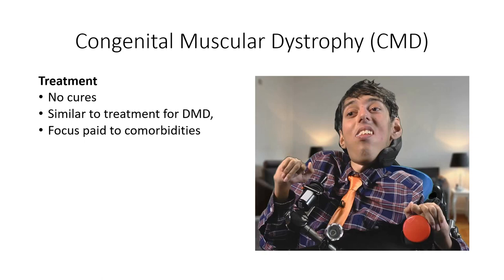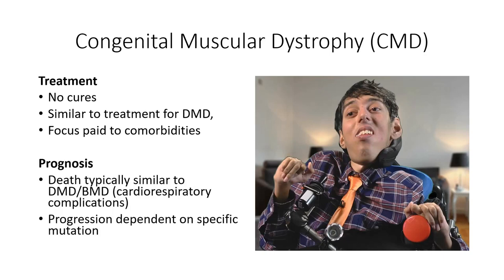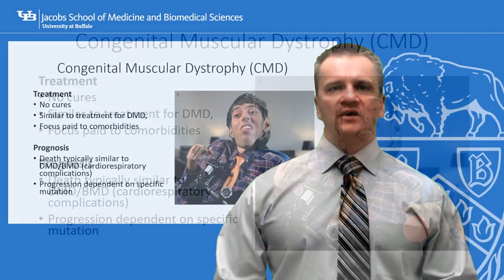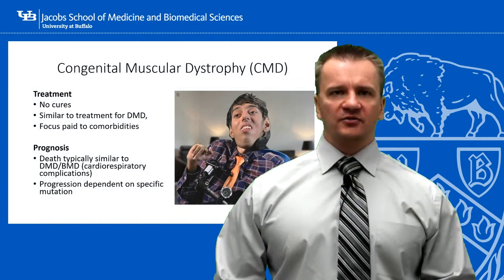Beyond these standard treatments, care for comorbidities is based on the nature of the disease. For mutations where cardiac complications are common, for example, cardiac function should be carefully monitored, and ACE inhibitors and beta blockers may be prescribed to stave off cardiomegaly. Ultimately, the prognosis is dependent on the specific mutation. In severe forms, such as with Walker-Warburg syndrome, the patient will die within the first few years of life, while in other non-progressive forms the patient may experience a relatively normal lifespan.